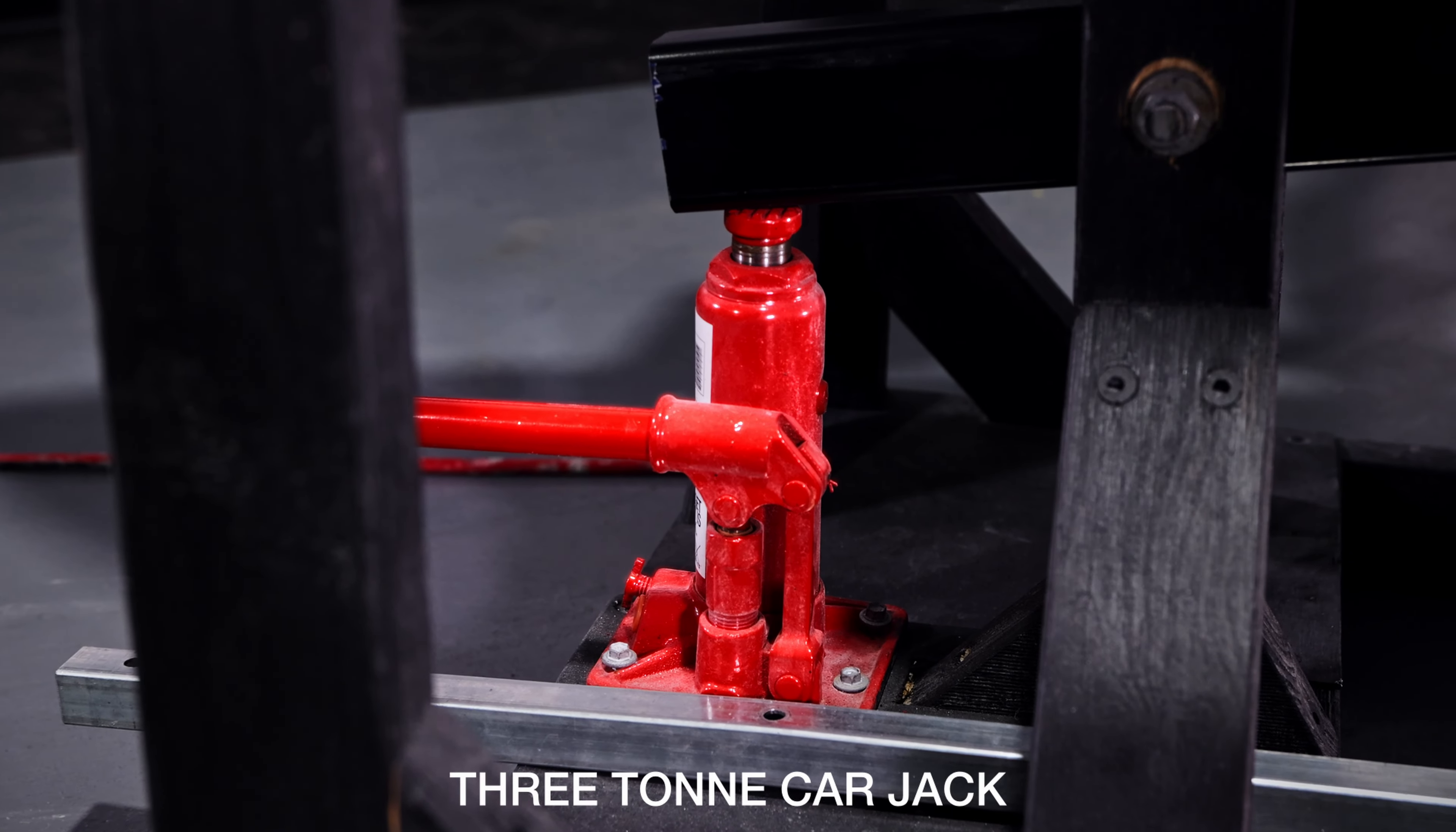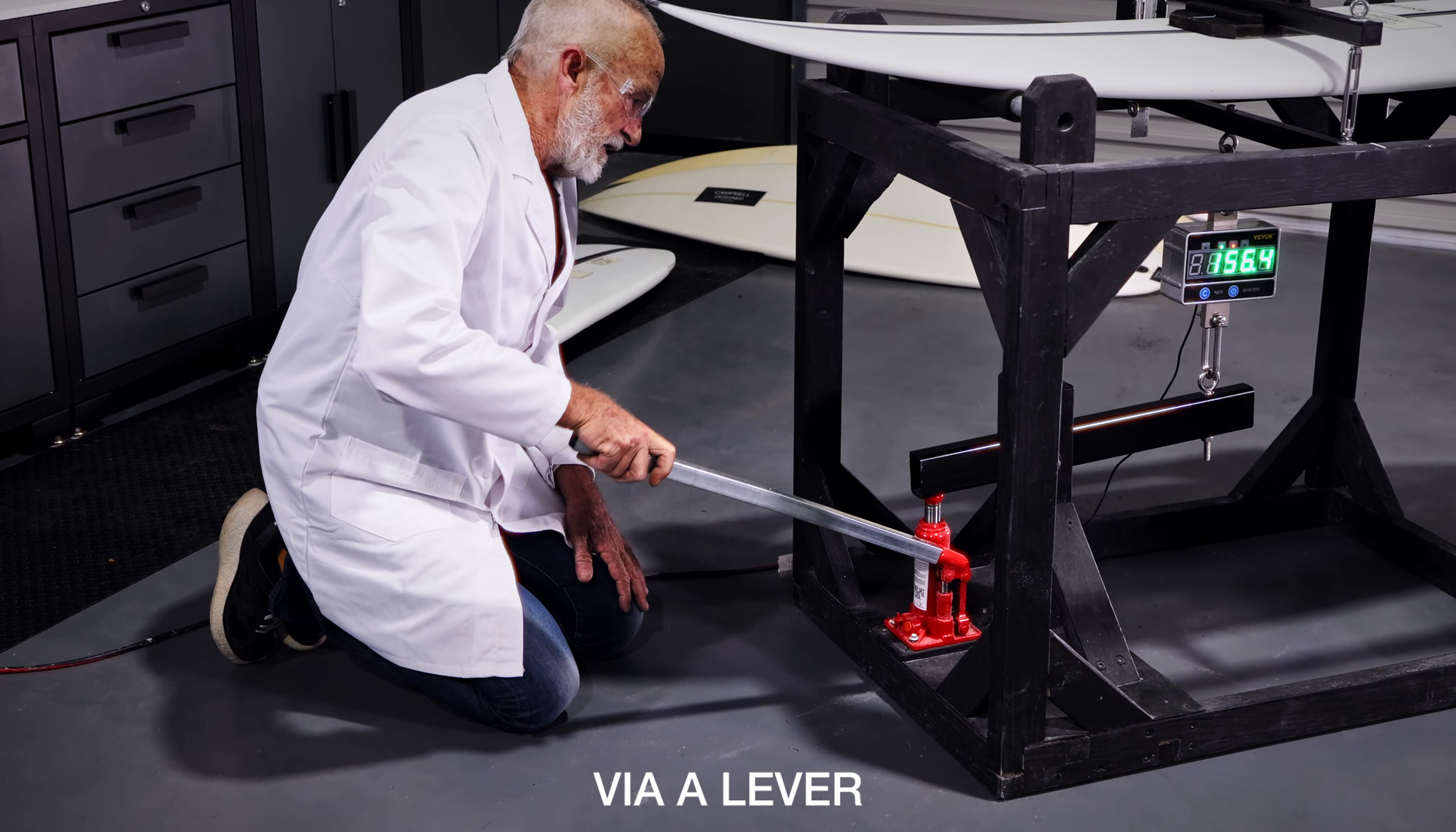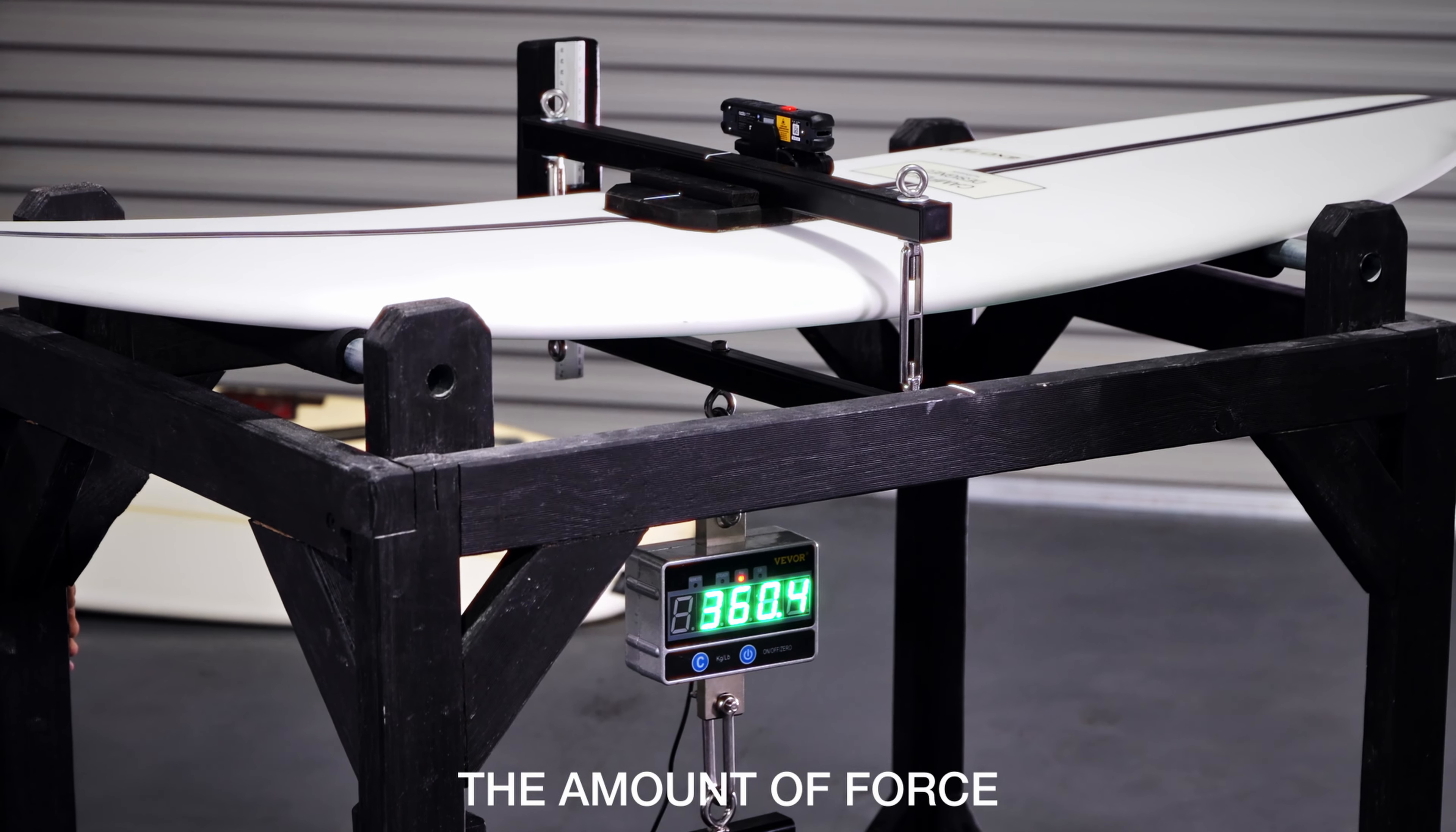Downforce from a three-ton carjack is gradually applied to the surfboard via a lever. A crane scale situated between this lever and the test subject displays in kilograms the amount of force.